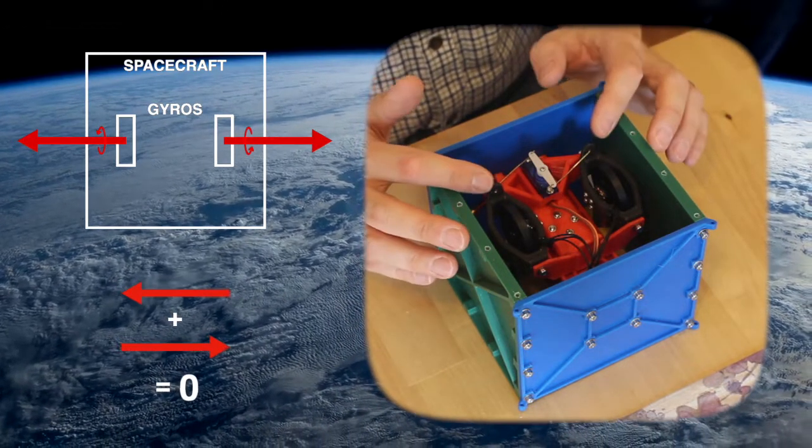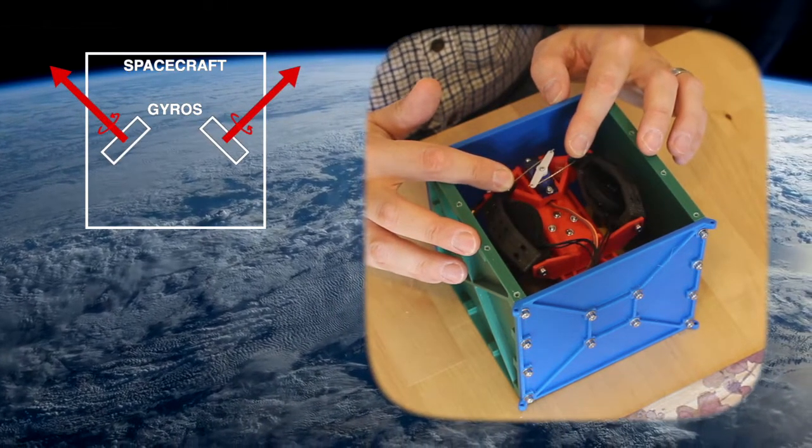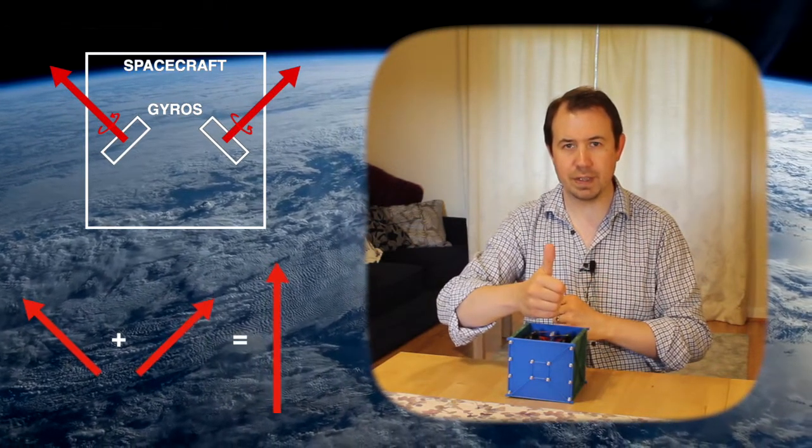Now imagine that using gimbal mounts we can pivot the axes of the two gyroscopes towards each other. The sum of the two angular momentum vectors creates a single resultant angular momentum vector.